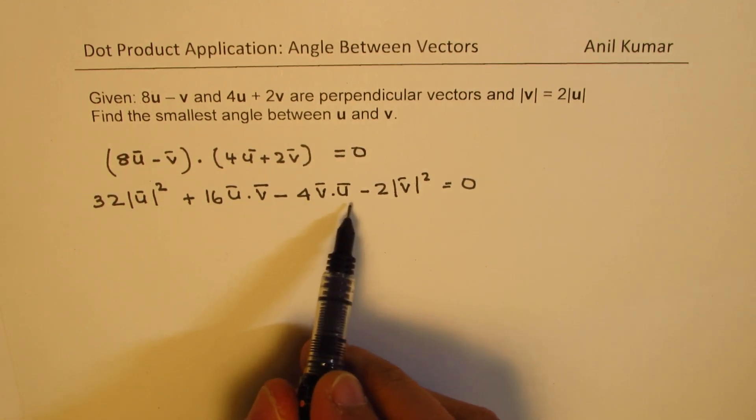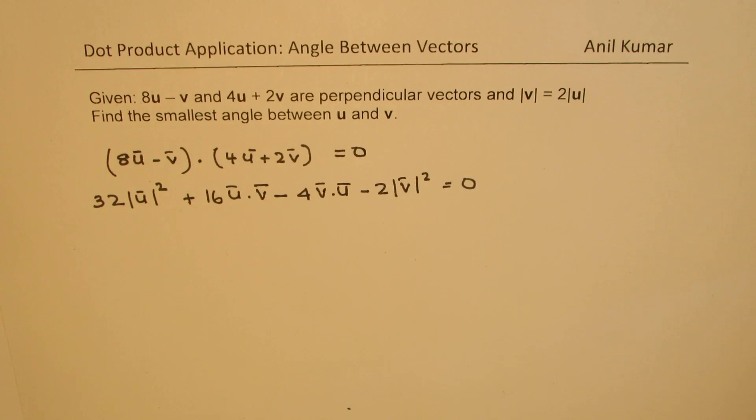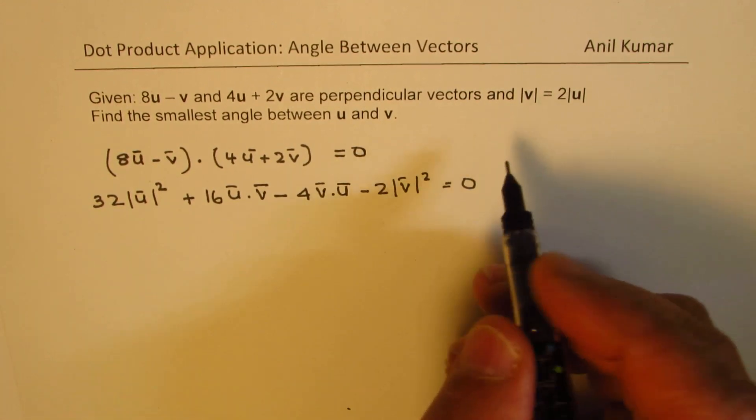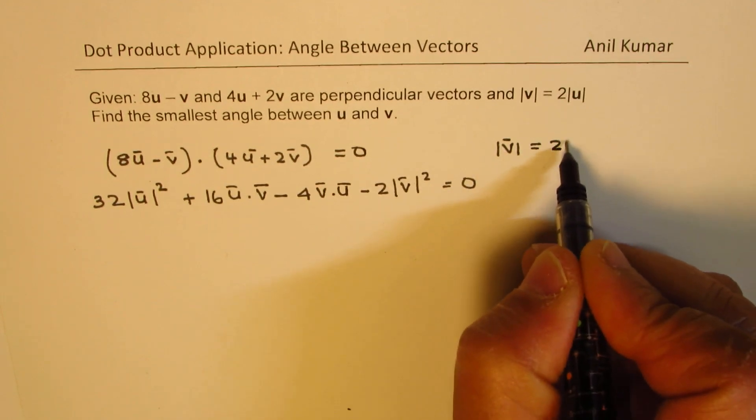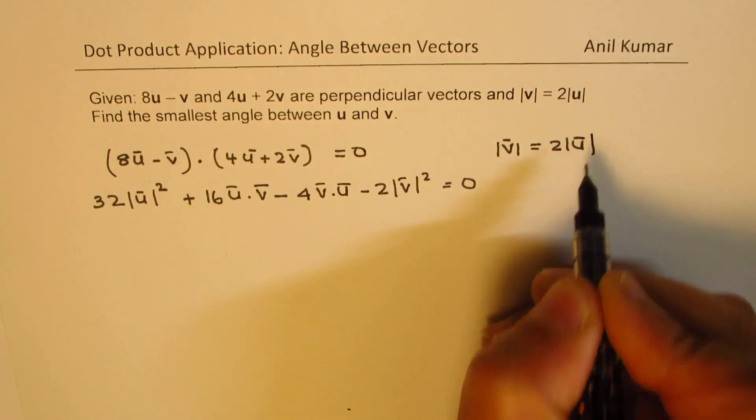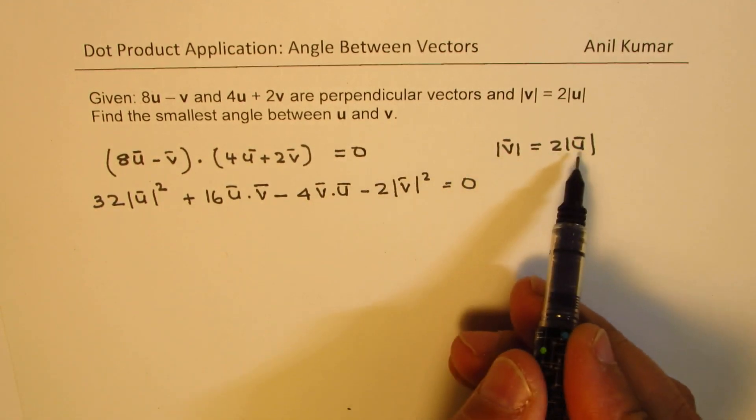We can combine the like terms. We are also given that the magnitude of v is twice the magnitude of u, so we can convert v into u.